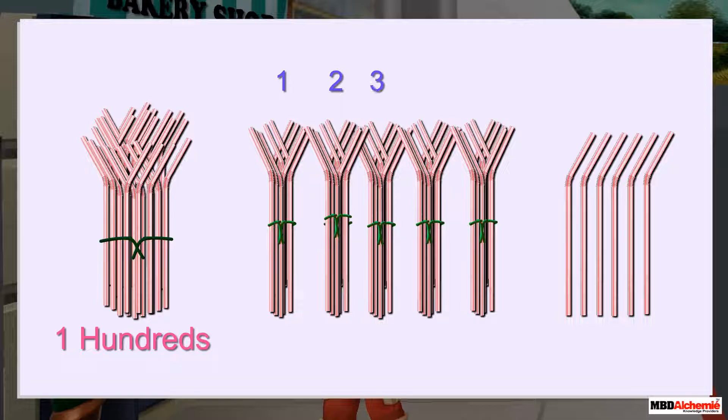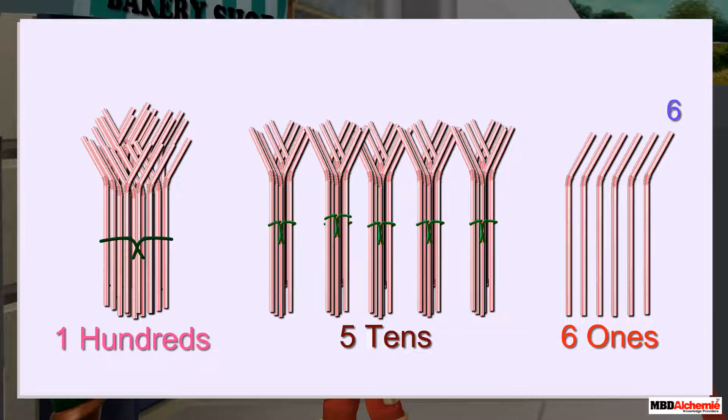One, two, three, four, and five. Five bundles of tens. And one, two, three, four, five, and six. Six loose straws.